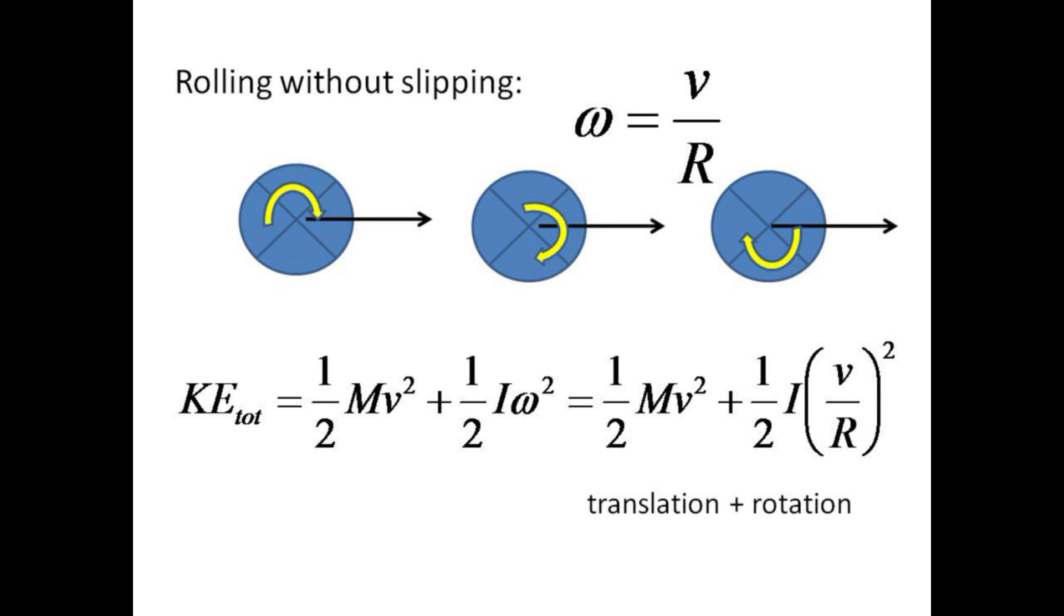When an object rolls without slipping, both forms of kinetic energy are present. The condition for rolling without slipping is that the angular velocity omega be equal to the translational velocity divided by the radius of the object r. The total kinetic energy is thus one-half mv squared plus one-half i omega squared, or one-half mv squared plus one-half i times v over r quantity squared.